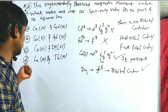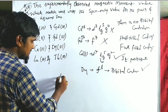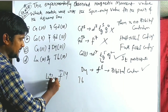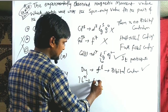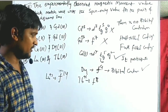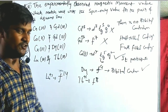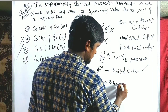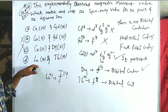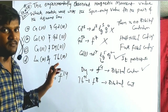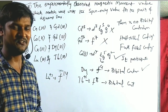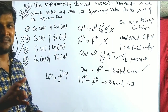For option D: Lutetium³⁺ is f¹⁴ and Terbium³⁺ is f⁹. Lutetium has no orbital contribution, but Terbium³⁺ (f⁹) does participate in orbital contribution, so option D is also not correct. Therefore, our answer is option A — Chromium³⁺ and Gadolinium³⁺. You can easily get two marks from GATE or four marks from CSIR on this question.